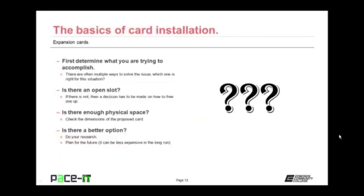Before we get started on the physical steps, there is some planning involved. First, determine what you're trying to accomplish — there are often multiple ways to solve an issue, so which one is right for this situation? Next, is there an open slot? It really doesn't do you much good if there's not. If there is not an open slot, you need to decide how to free up a slot or whether to go a different route. Is there enough physical space inside the case? Check the dimensions of the proposed card.